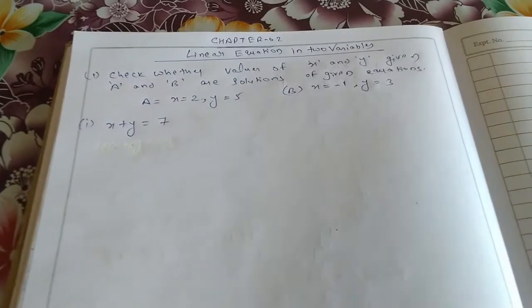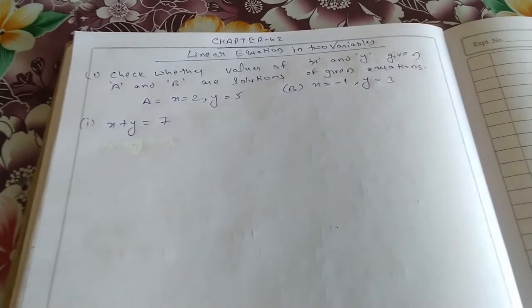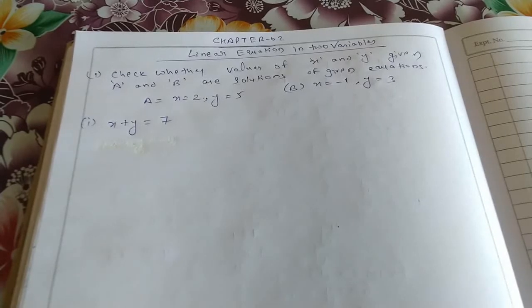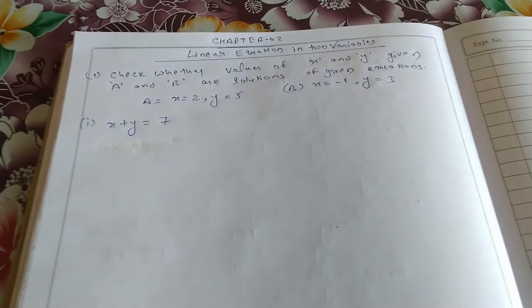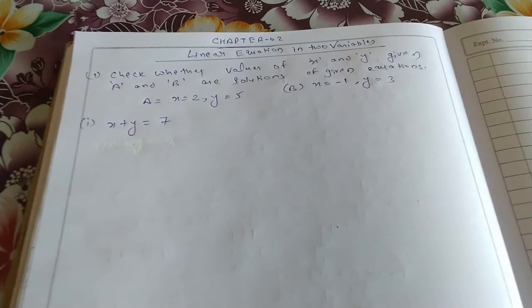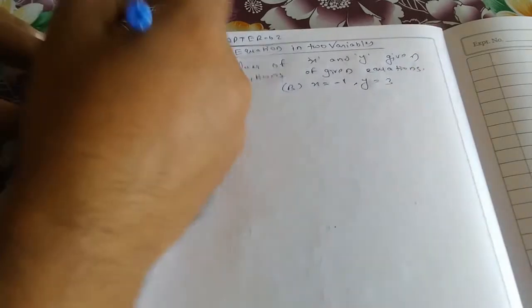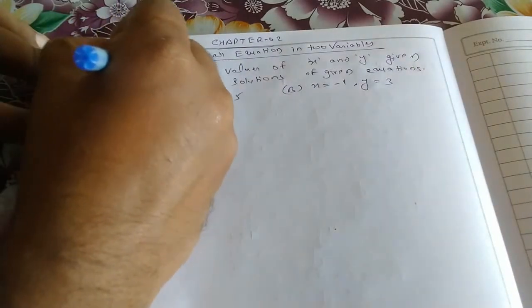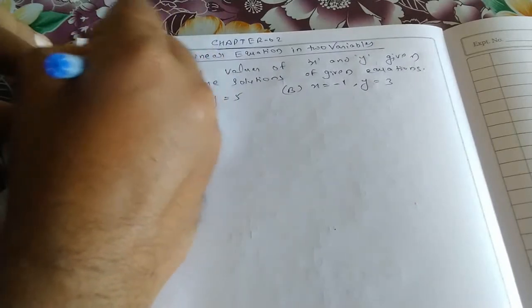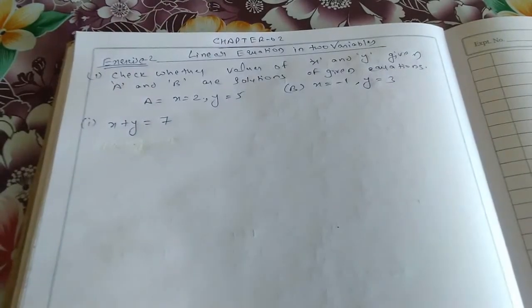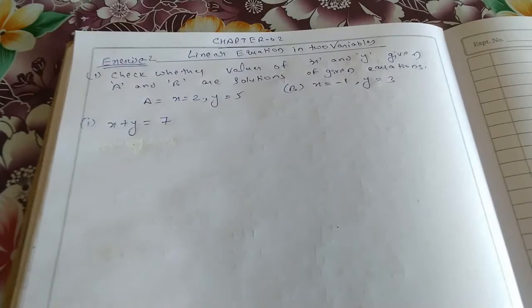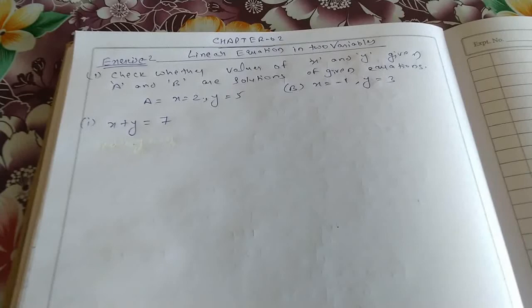Good morning students. As our last video, we had discussed about the elimination and substitution method. Today we have to start the class from Exercise Number 2, Chapter Number 2, Linear Equations. The first question is: check whether the values of x and y given as A and B are solutions of the given equations.